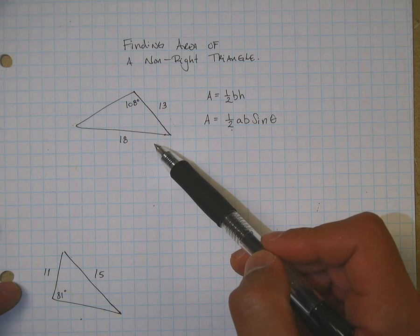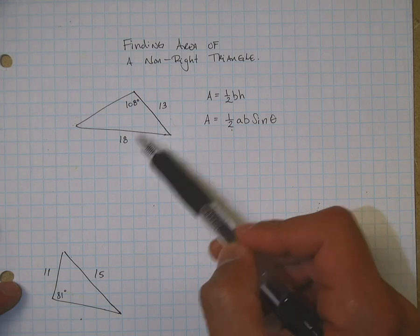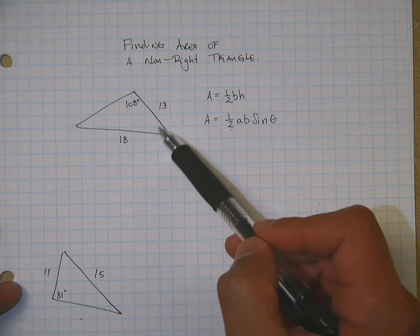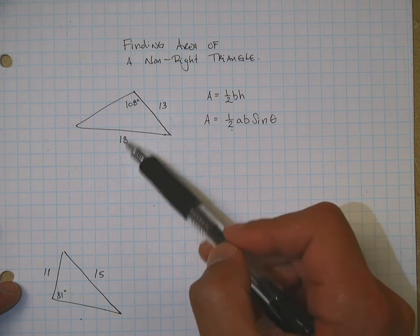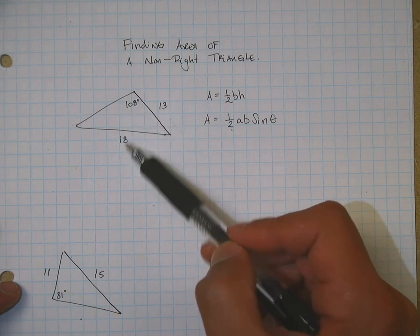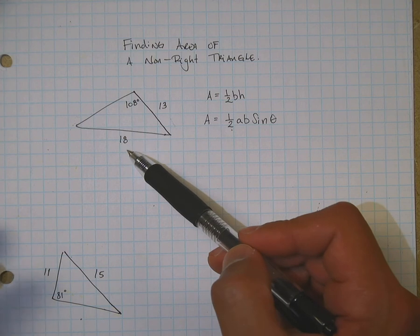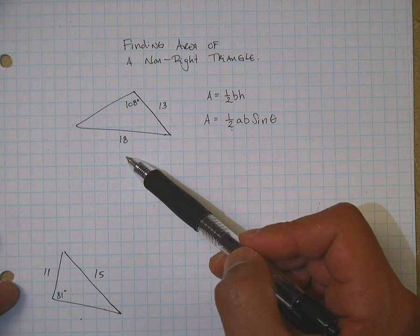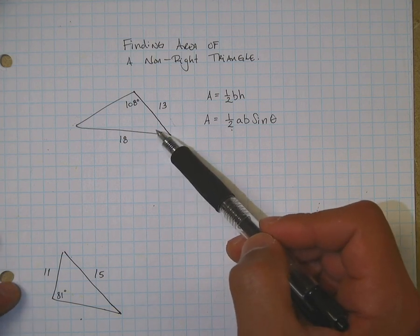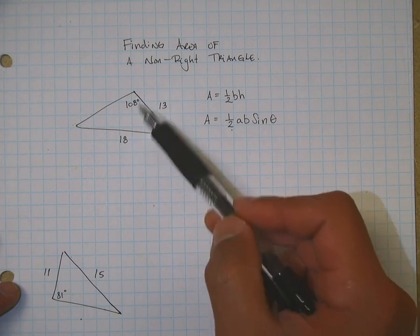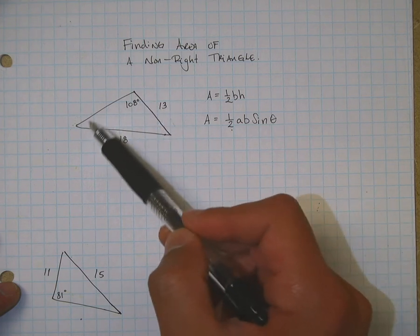Now, in this particular case, they give me these two sides, and I don't know this angle, but they do give me the opposite side of this angle here. So, what I'm going to do is use the law of sines to figure out this angle here. I have this side here. I can figure out this angle here.